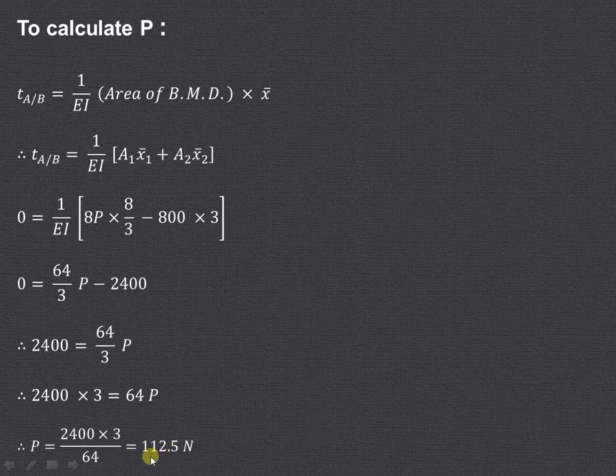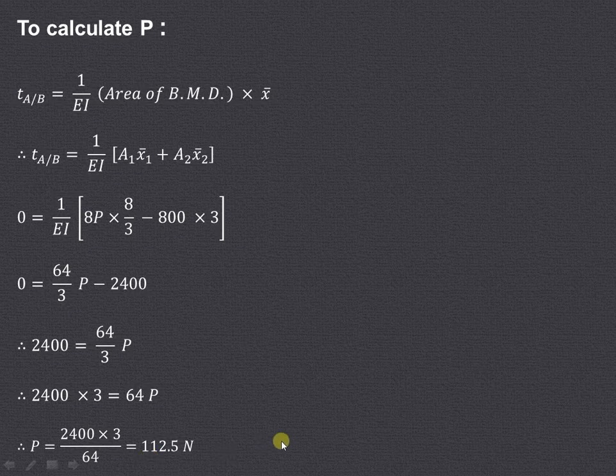So when the value of P is 112.5 N, we will get no deflection or 0 deflection at the free end A of the given particular cantilever beam. So in this way we can find out this value of P. Thank you very much for watching.